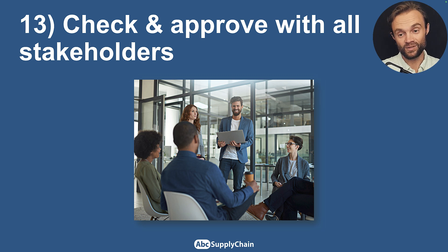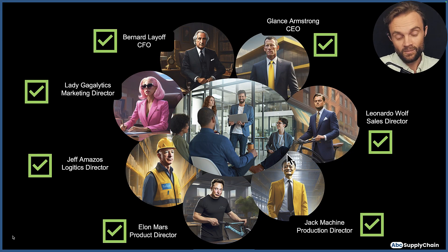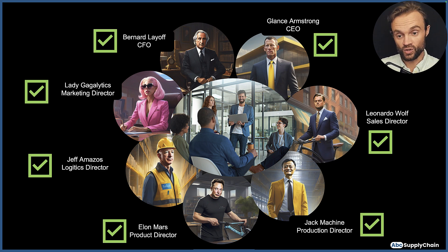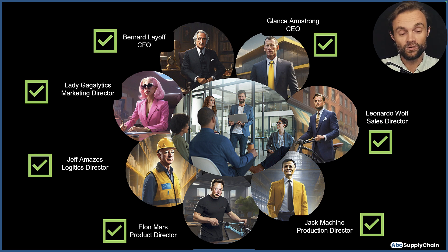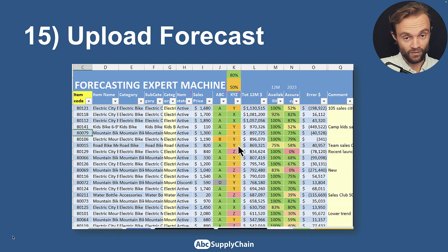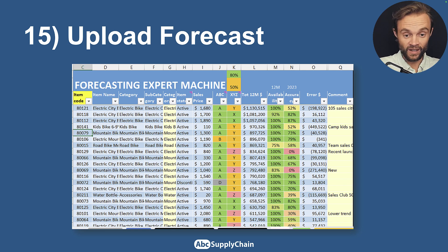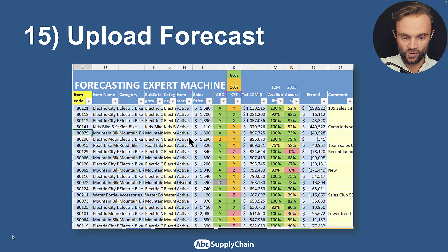Once you have all this information, check and get approval from all stakeholders — sales, marketing, finance, maybe the CEO — to make sure everyone is on the same page. Information can change a lot from the idea to execution, and everyone must approve the risks and opportunities of the new launch. Once the forecast is approved, upload it into your forecasting tool, software, or Excel. Whatever the system — ERP or Excel — make sure everything is in one place with all the information you need.